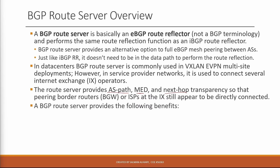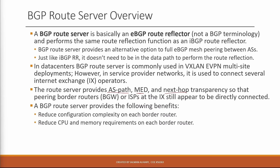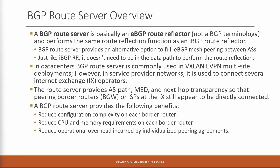A BGP route server provides the following benefits: reduce configuration complexity on each border router, reduce CPU and memory requirements on each border router because there are fewer peers, and reduce operational overhead incurred by individualized peering agreements.